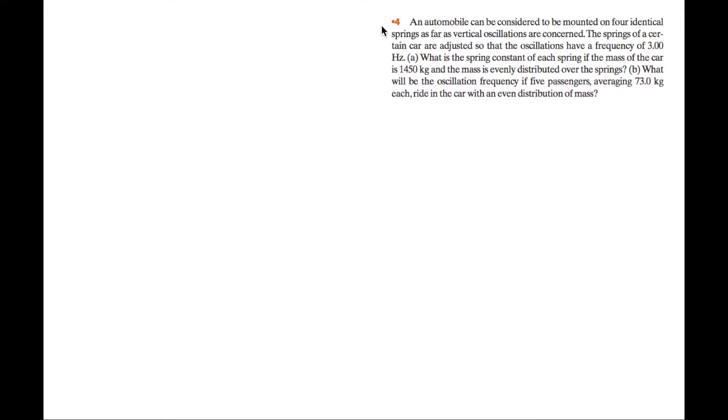Okay, so in this question, an automobile can be considered to be mounted on four identical springs as far as vertical oscillations are concerned. The springs of certain cars are adjusted so that the oscillations have a frequency of 3.00 Hz. Part A: What is the spring constant of each spring if the mass of the car is 1450 kg and the mass is evenly distributed over the springs? Part B: What will be the oscillation frequency if five passengers averaging 73.0 kg each ride in the car with an even distribution of mass?